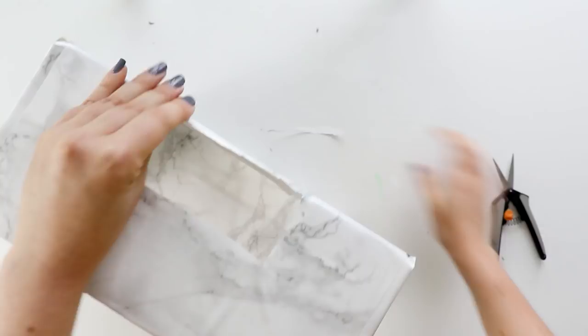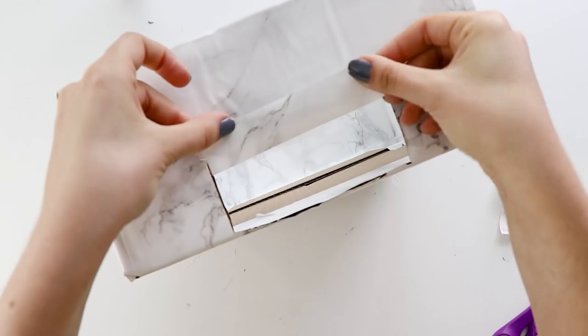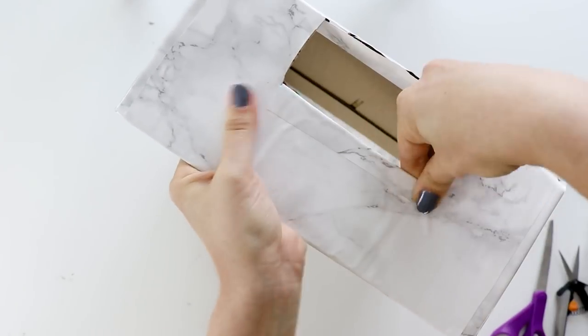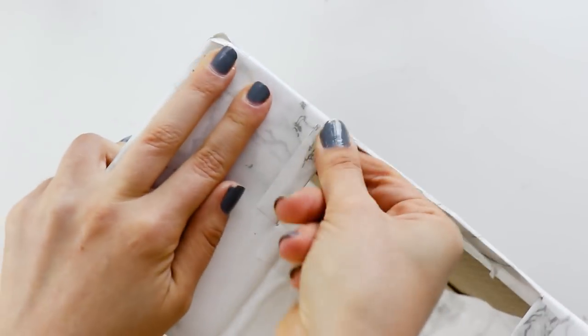So once you've covered the entire box, use a craft knife and scissors to open up the goals again. And to make it look nice and neat, cut some small pieces of contact paper to fit over all of the edges.